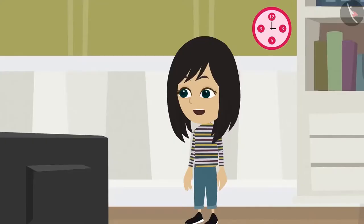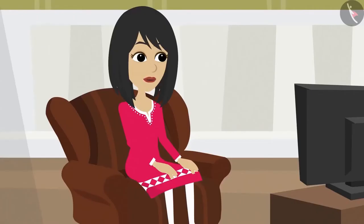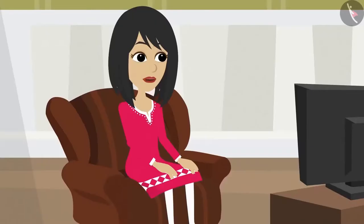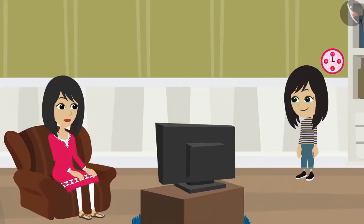Mommy, I have made a list of objects where a circle has been used in the design. Neha, can you read out your list? The very first is our wall clock. It has six circles. Our clock has six circles? I have never even looked at the clock so carefully. Very good.